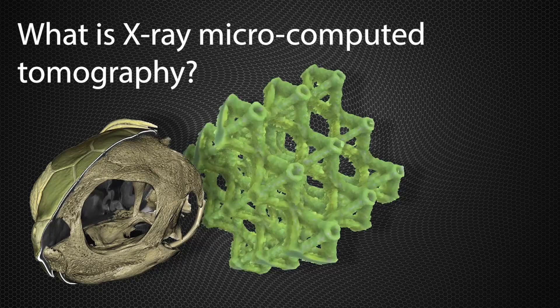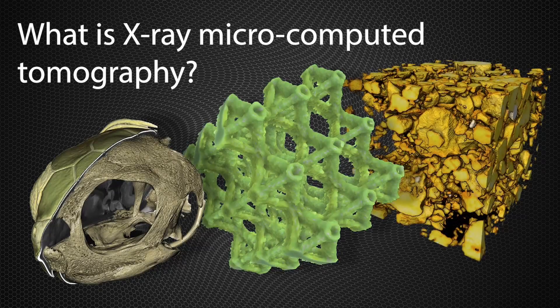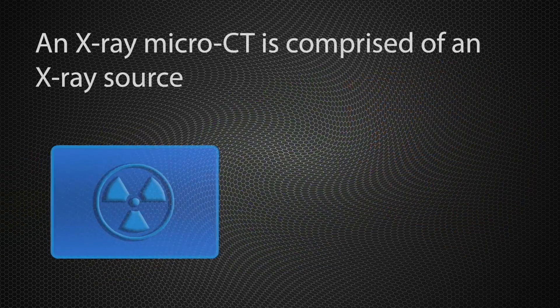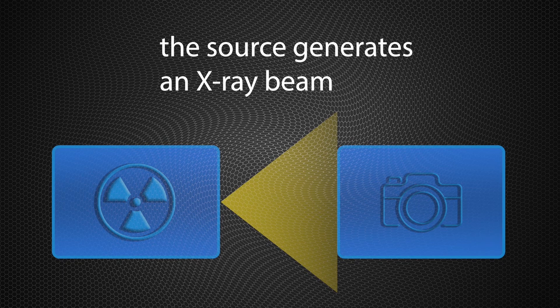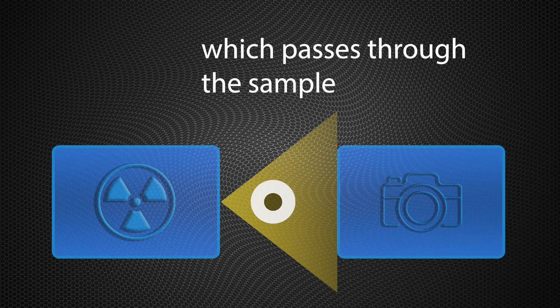What is X-ray microcomputer tomography? An X-ray microCT is comprised of an X-ray source and a camera. The source generates an X-ray beam which passes through the sample.